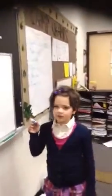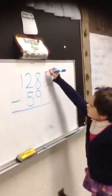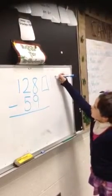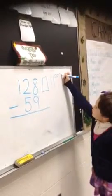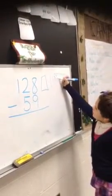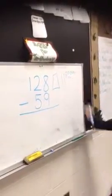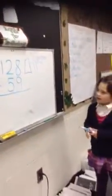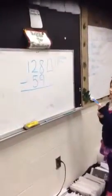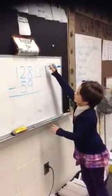We cannot subtract, so we have to draw it. We can't take away 9 ones because we only have 8. That means we need to ungroup a 10 stick.